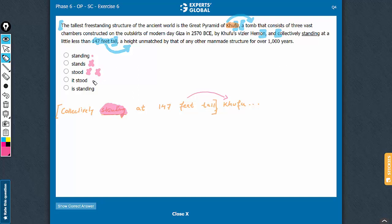Collectively, it stood at 147 feet tall, Khufu. Doesn't make sense. Incorrect tense also. And then, the usage of a subject here, it, makes it a clause. So, in that case, this would not be a modifying phrase here. So, answer choice D has many mistakes. This is probably the worst of the five answer choices.